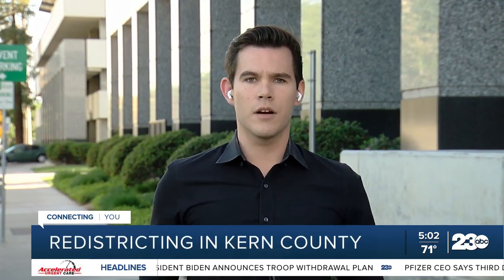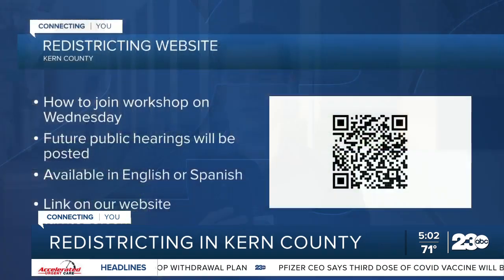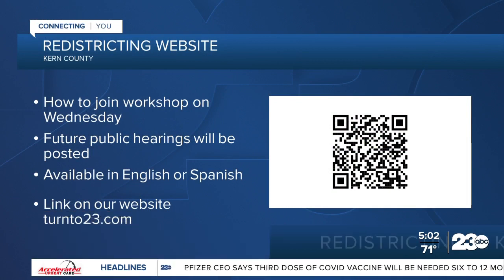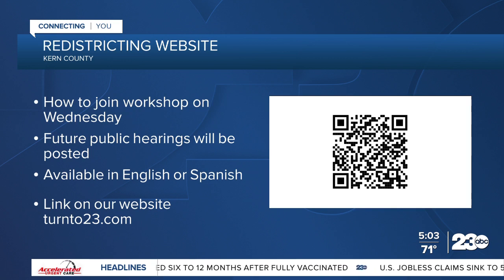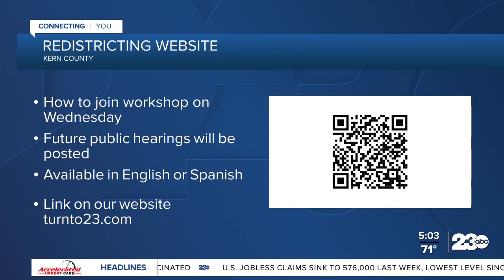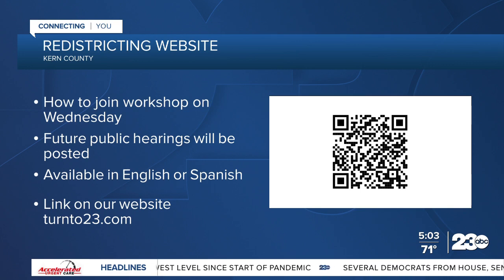The county is launching a website to give people a chance to reach out for details about redistricting. You can point your smartphone camera at the QR code on your screen and it will bring up the website, which has more information about why redistricting is important in Kern County and how to join the Wednesday workshop. There's also an email address where you can send comments or concerns, and the site is available in both English and Spanish. The link is also available on the station's website, Turn to 23.com.